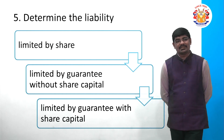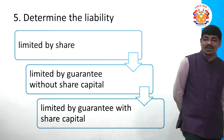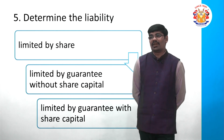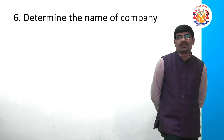You need to decide the liability of the company: whether the company's liability will be limited by shares, limited by guarantee without share capital (generally found in Section 8 companies — non-trading concerns or license companies), or limited by guarantee with share capital. Liability must also be decided at this stage.